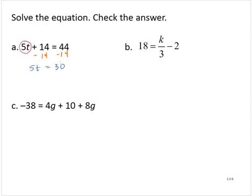So now I have the variable term isolated. And to isolate the variable, right now it's being multiplied by 5. So I will divide both sides by 5, yielding t is equal to 6.